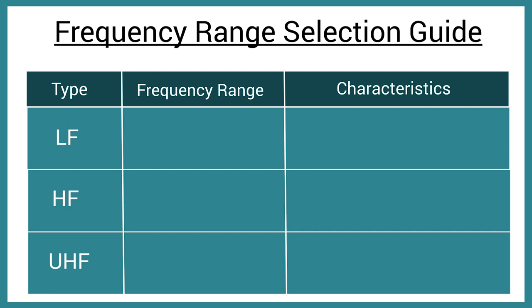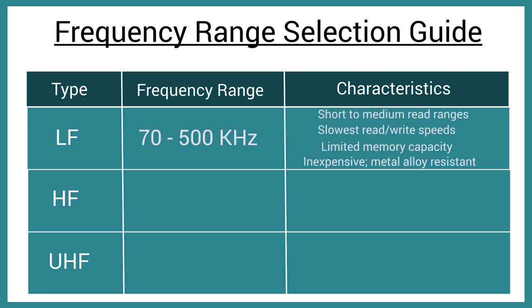The frequency range of the RFID system is dependent on the system environment and its application. The three ranges available are low frequency (LF), high frequency (HF), and ultra-high frequency (UHF). Low frequency RFID covers between 70 to 500 kHz. This range is most typically used in short to medium read distances with limited memory capacity. This frequency range is metal alloy resistant, which makes it the best choice for areas that may have surrounding metal.